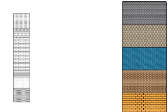Stratigraphic correlation is a fundamental concept in geology and archaeology, referring to the process of establishing relationships between rock layers or strata from different geographic locations. The goal is to determine the equivalence or similarity of these layers in terms of their age, lithology, and other characteristics.